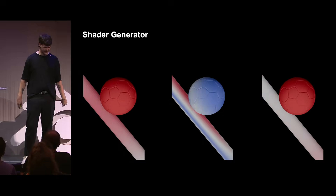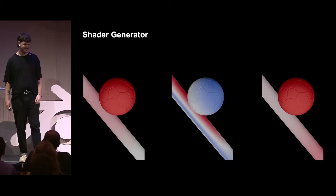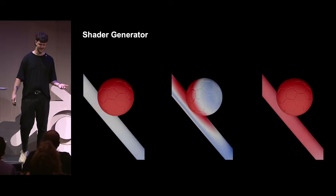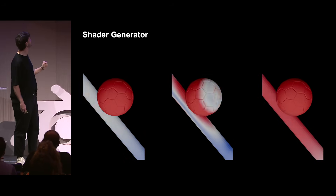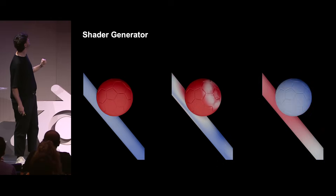Some more examples of different attribute visualizations. Even though I don't really like football, this visualization makes me like it a little bit more.